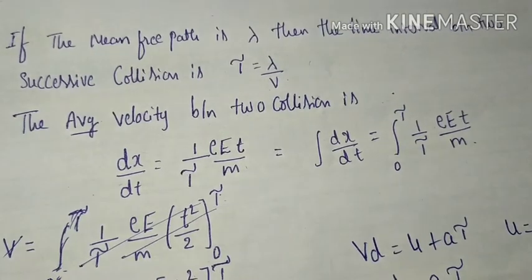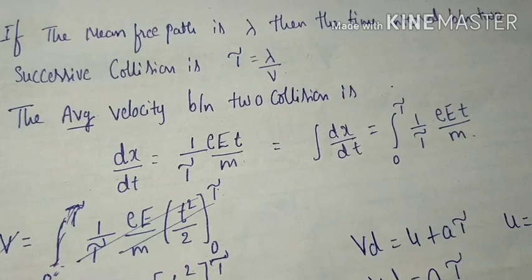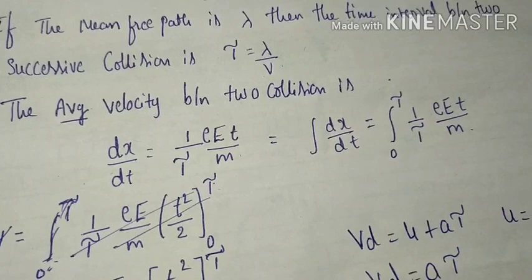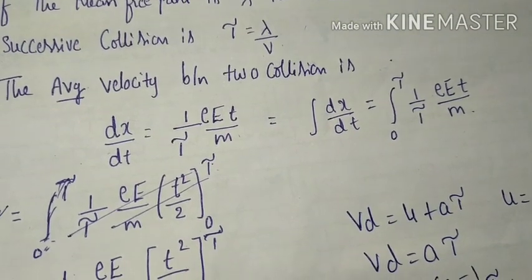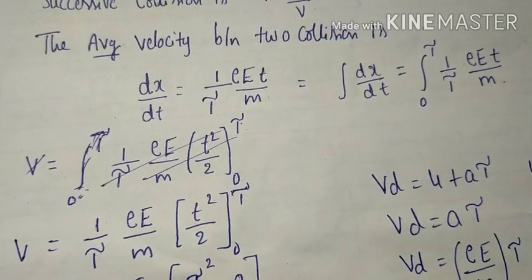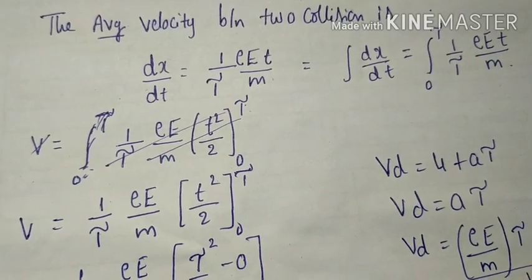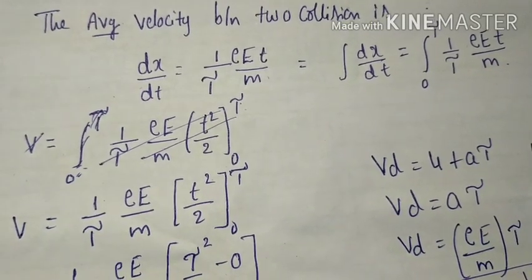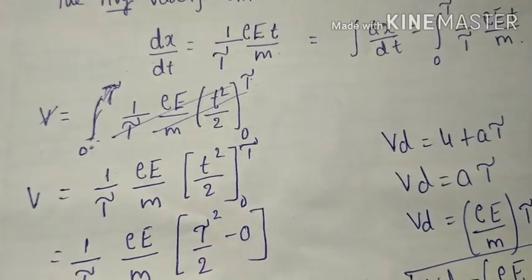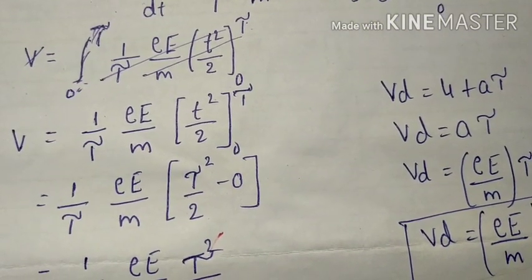The average velocity between two successive collisions is taken as dx/dt = (1/2)(eE/m)t. On integrating this expression, v equals the integral of (1/2)(eE/m) dt, with variable t, giving v = (1/2)(eE/m) multiplied by t²/2, evaluated with upper limit tau and lower limit zero.